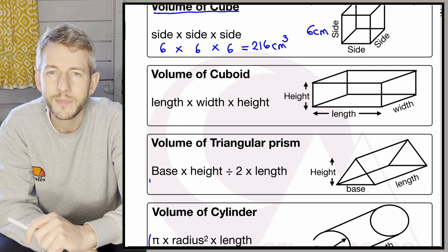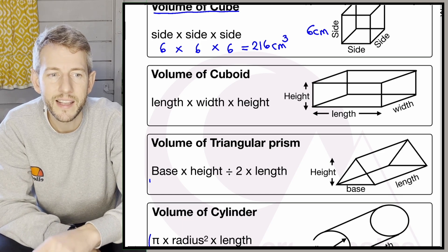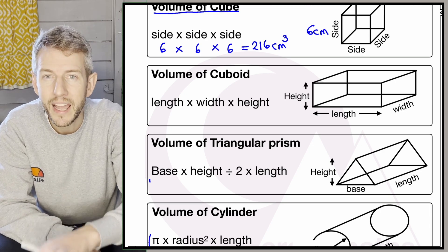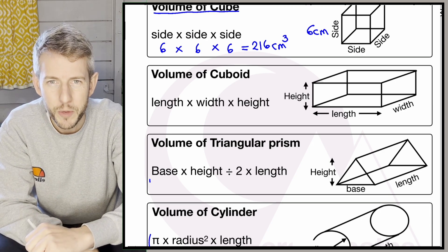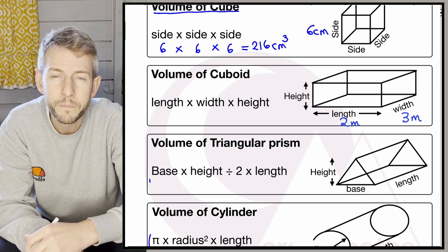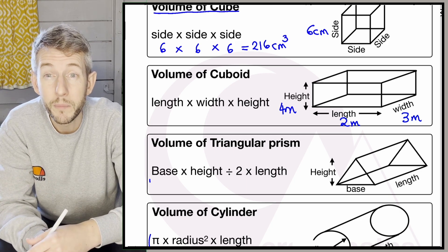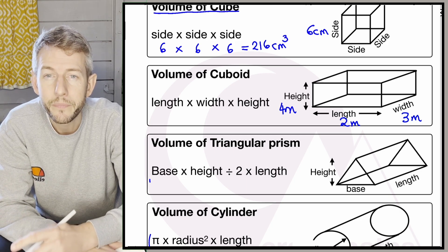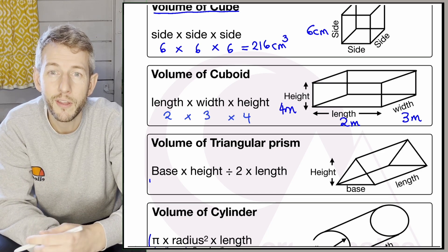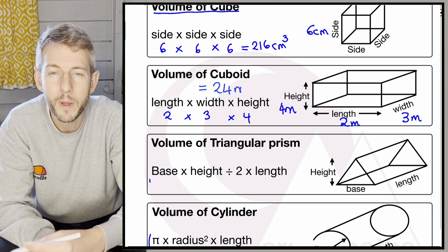The second formula is for volume of a cuboid: length times width times height. It's the same as a cube, but the length, width, and height may have different measurements. So if the length is 2, the width is 3, and the height is 4 metres, we do 2 times 3 times 4. 2 times 3 is 6, and 6 times 4 is 24, giving us 24 metres cubed.